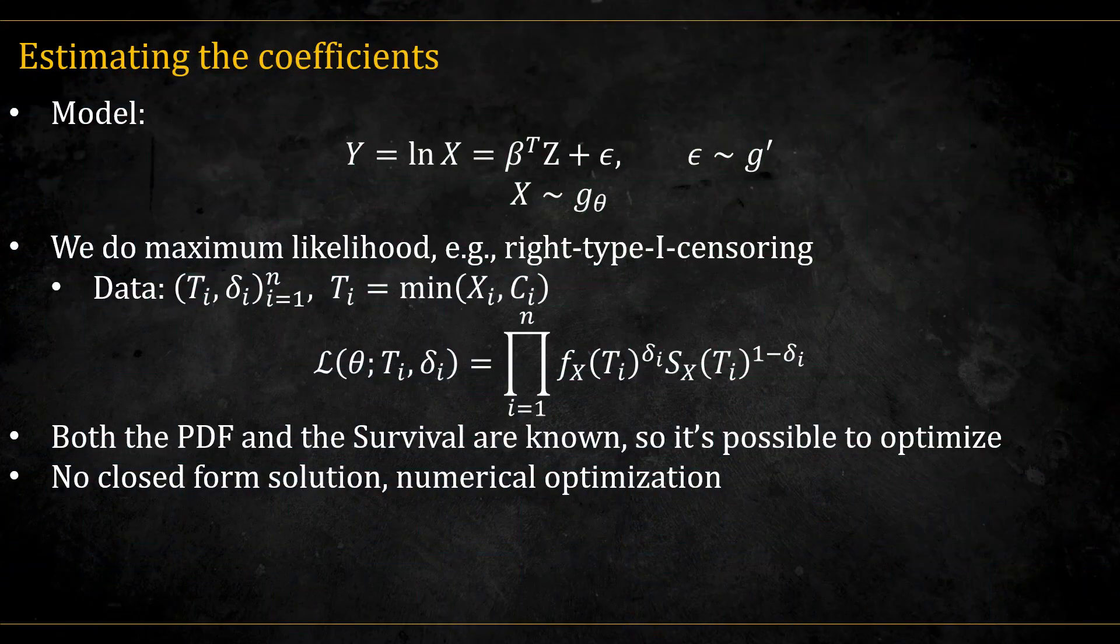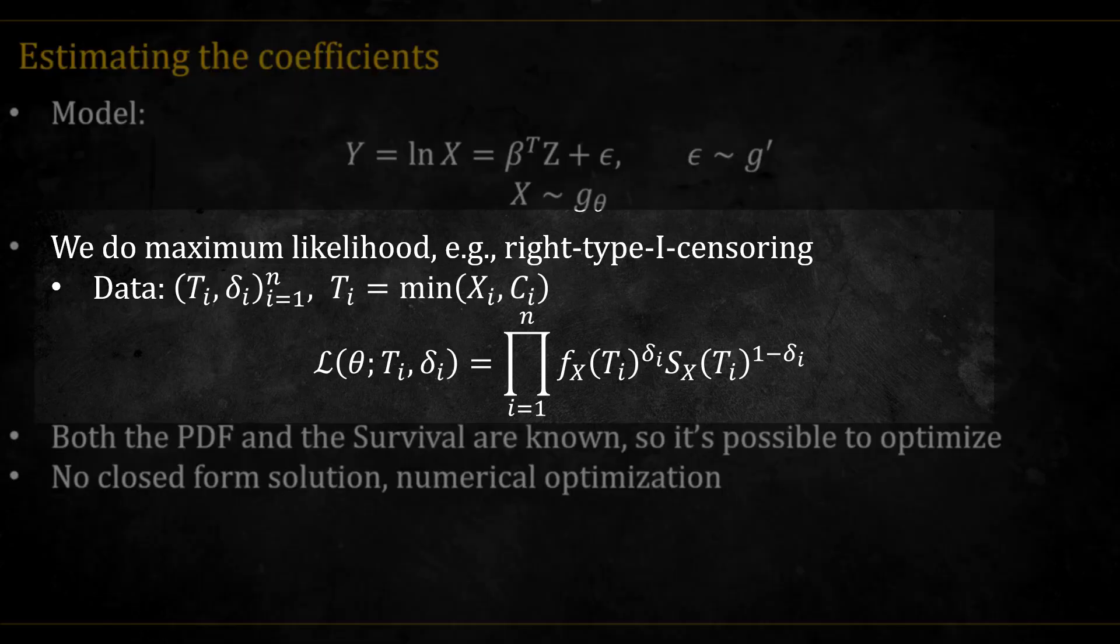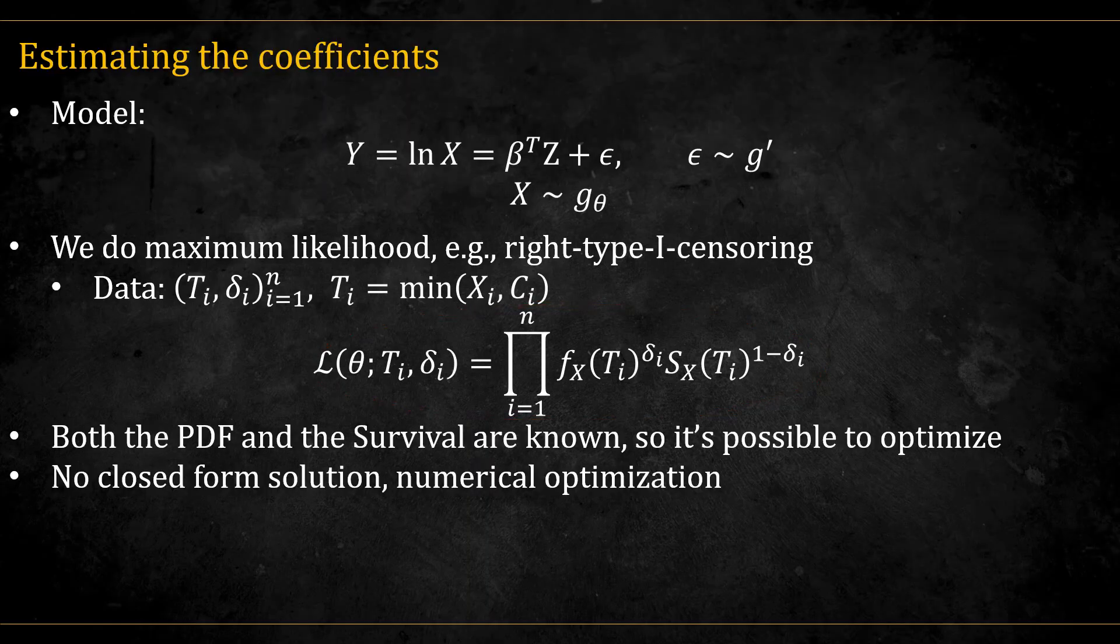How do we estimate the betas in this model? Well, since this is a fully parametric model, we can simply write out the likelihood and maximize it. For example, in the case of right type 1 censoring, the data is ordered as t's and deltas, where the t's is the time to event or to censoring, and the deltas are the indicator variables where 1 means event and 0 means censored.